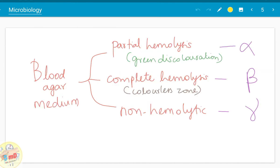The alpha bacteria show partial hemolysis therefore a green discoloration is seen. Whereas the beta hemolytic bacteria show complete hemolysis and colorless zone is seen in the blood agar culture medium. Whereas the gamma type of bacteria does not show any hemolytic properties and are non-hemolytic.